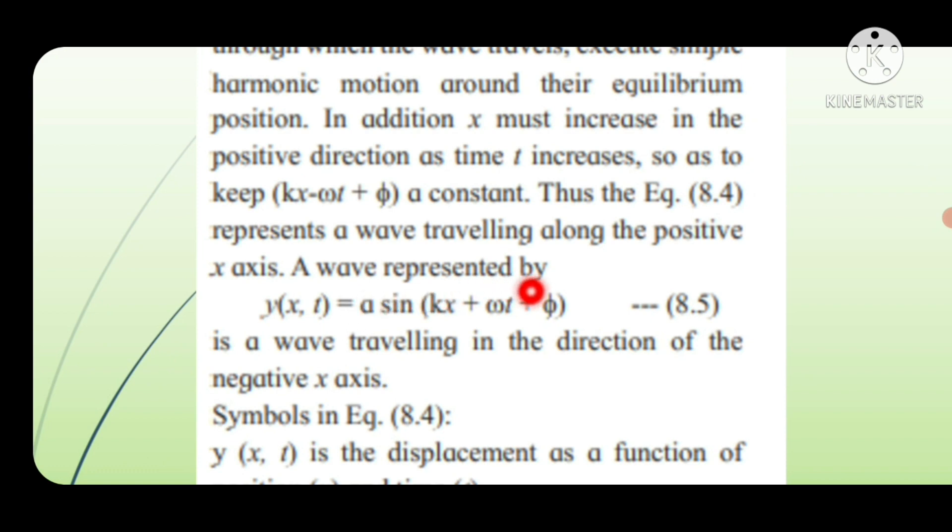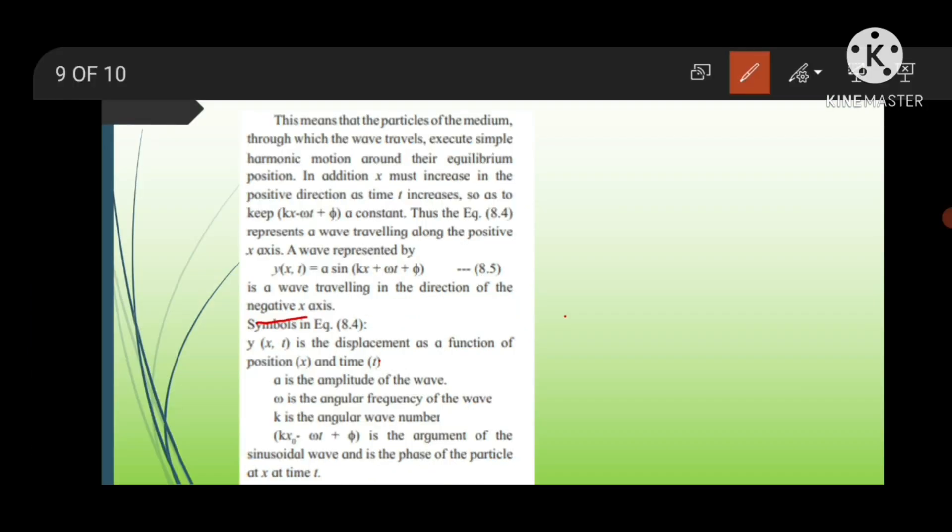A wave represented by y(x,t) = a sin(kx + ωt + φ) is a wave traveling in the direction of the negative x axis. This is for negative x axis. And kx - ωt + φ is for the positive x axis.